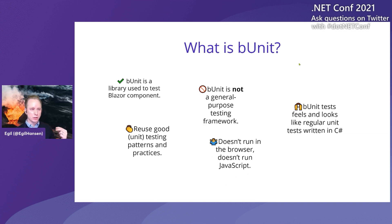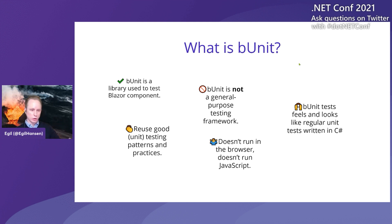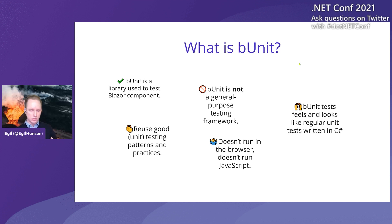One thing I want to highlight that might surprise newcomers is that bUnit doesn't run a web browser. On day one we saw some of the new testing features in Visual Studio — they talked about Playwright, which spins up a browser to run tests. But bUnit doesn't do that. bUnit runs entirely in C#, which also means it doesn't run your JavaScript. If you have a very JavaScript-heavy component, you might want to use Playwright. But if you primarily have C# in your Blazor components, bUnit is perfect.